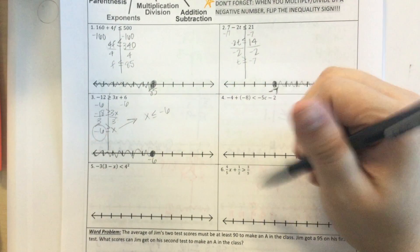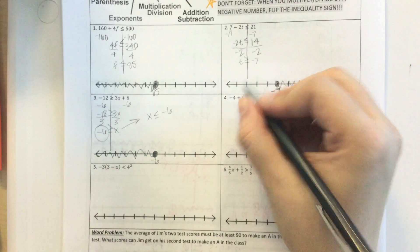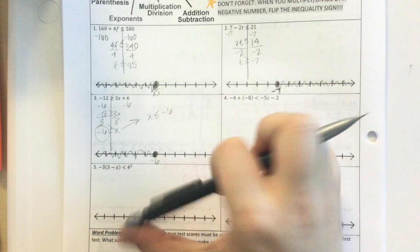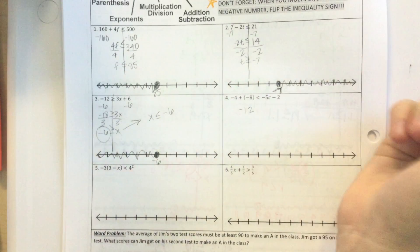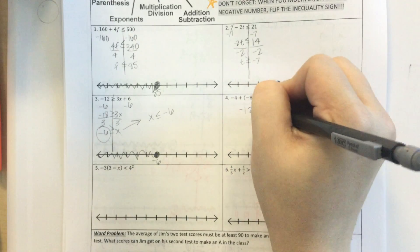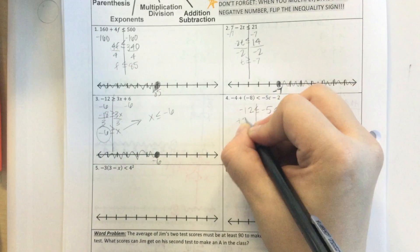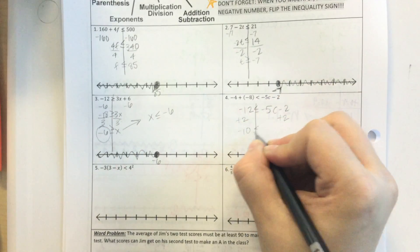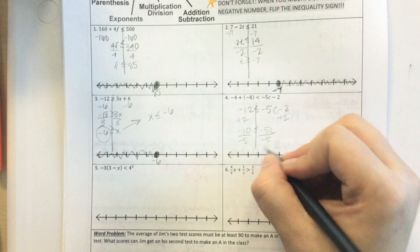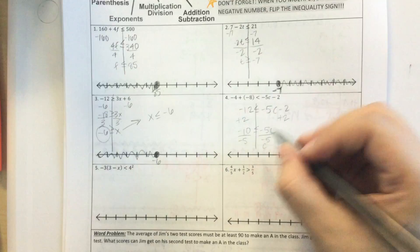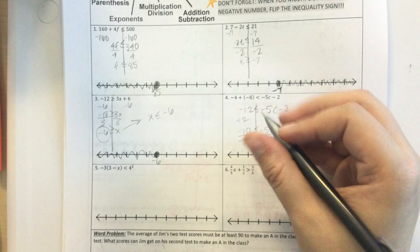All right, number 4. We have to do a little bit of combining like terms. So negative 4 plus a negative 8. Adding a negative is just like subtracting a positive. So negative 4 minus 8 is negative 12. And all of these stay the same. I'm going to add 2. Negative 10. Divide by negative 5. So on this side I have C. I divided by a negative, so I had to flip the sign. Negative 10 divided by negative 5 is 2.